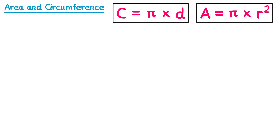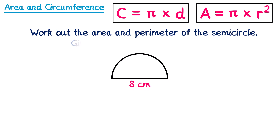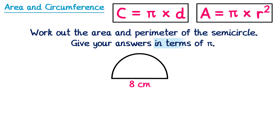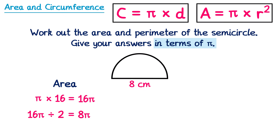You could also be asked to do these skills without a calculator, giving answers in terms of pi. For this semicircle, starting with the area: pi times the radius squared — pi times 4 squared. 4 squared is 16, so we have pi times 16, which is 16 pi. But this is a semicircle, so we only want half the area. 16 pi divided by 2 is 8 pi — and that's the answer, in cm squared.